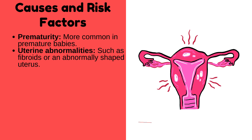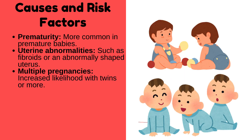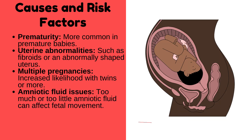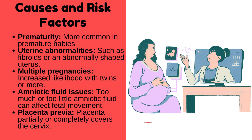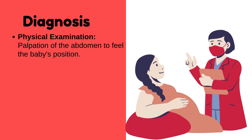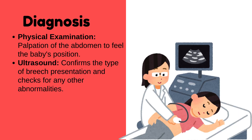Causes and risk factors of breech presentation include: prematurity — more common in premature babies; uterine abnormalities such as fibroids or an abnormally shaped uterus; multiple pregnancies — increased likelihood with twins or more; amniotic fluid issues — too much or too little amniotic fluid can affect fetal movement; and placenta previa — where the placenta partially or completely covers the cervix.